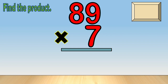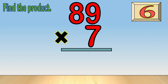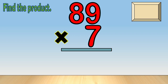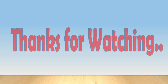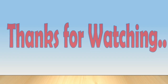Eighty-nine times seven — times up, the answer is 623. That's all for now. I hope you enjoyed learning about multiplying two-digit by one-digit numbers with regrouping. Thanks for watching!